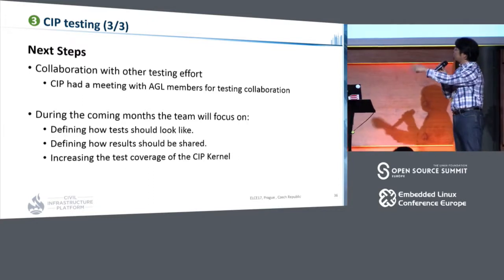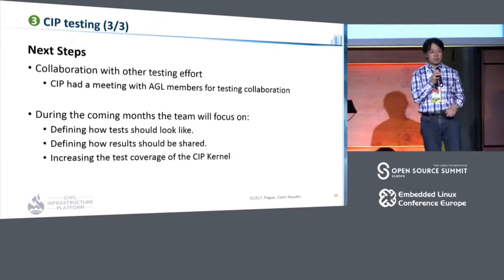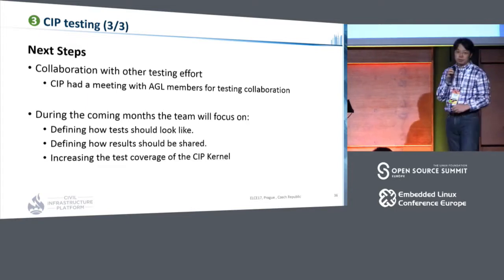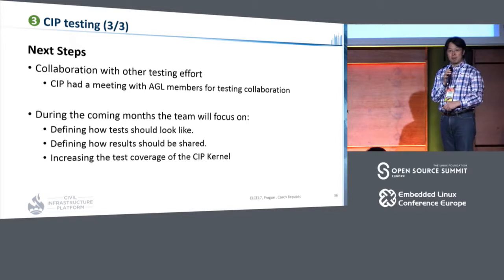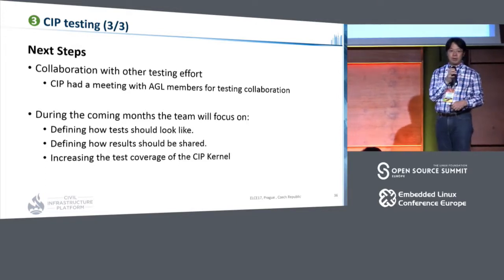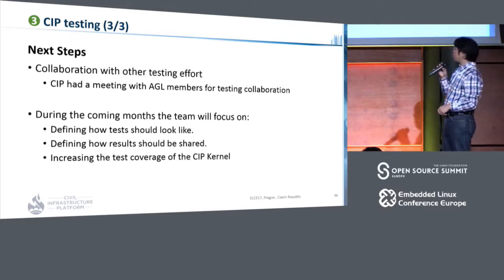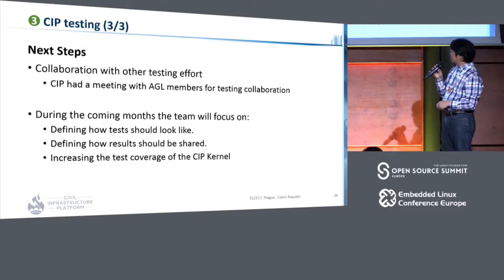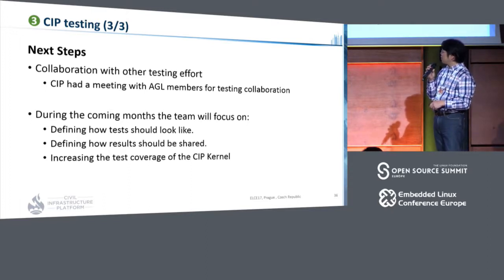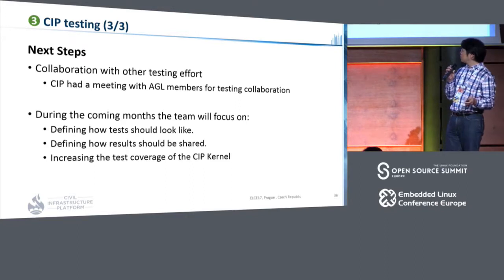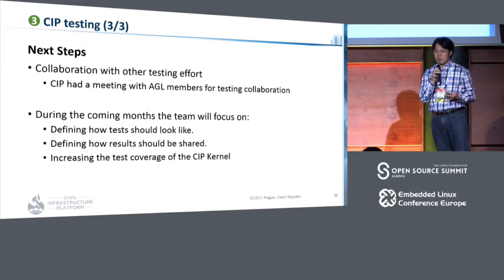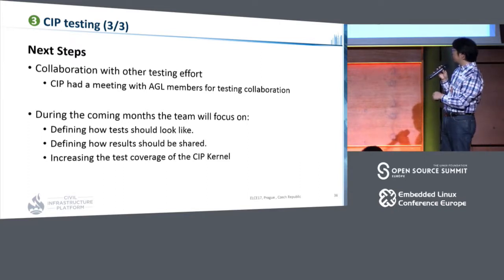The next step is we also want to collaborate with other testing efforts. For example, Automotive Grade Linux is also using KernelCI and LAVA for their testing environment, so we would like to collaborate and share this kind of effort with other projects. We also want to define how tests should look and how results should be shared, because sharing testing results is important for kernel developers to recognize regressions. These kinds of features will be added to the board-at-desk soon.